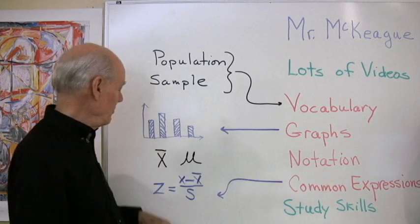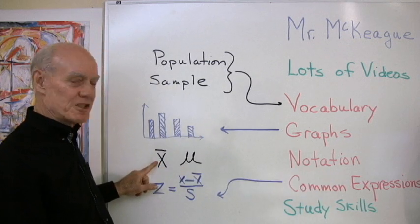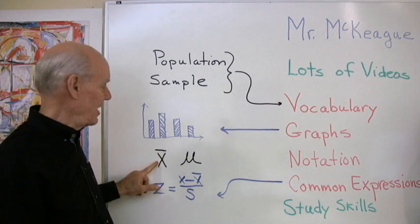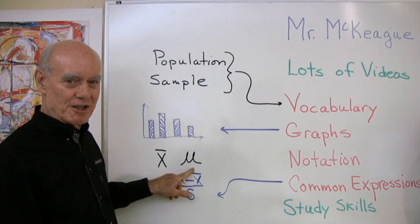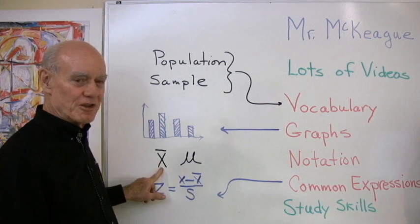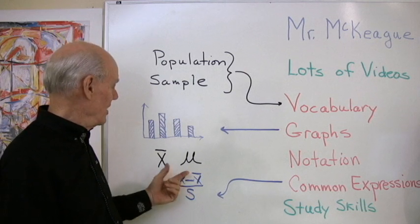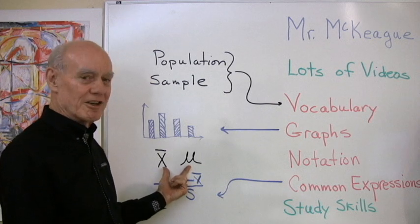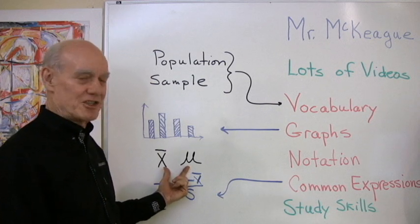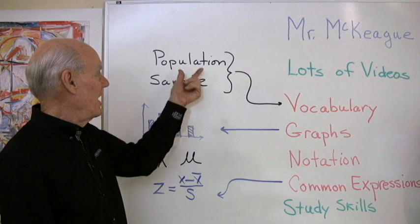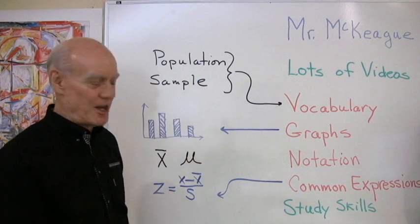Notation, we use notation like this x bar, it has a little bar over the top, and mu, that's a Greek letter mu. This stands for the mean of a sample and this is the mean of a population. So this notation right here that we'll talk about more in this lesson and the next one have to do with these populations and samples.